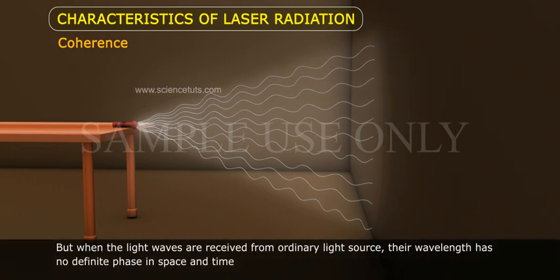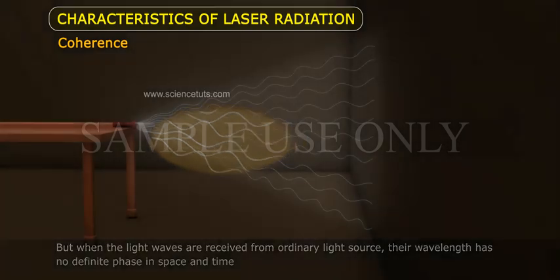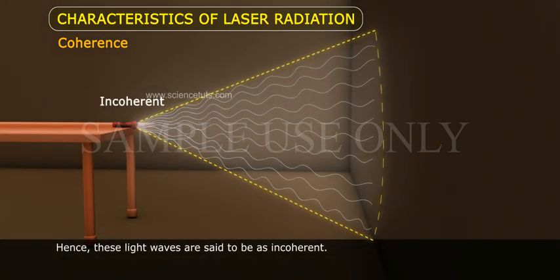But when light waves are received from an ordinary light source, their wavelength has no definite phase in space and time. Hence, these light waves are said to be incoherent.